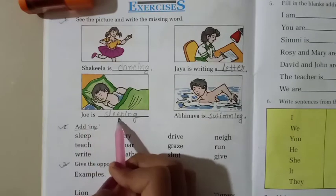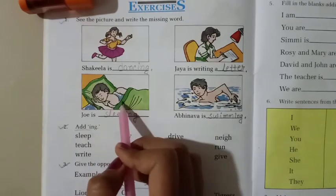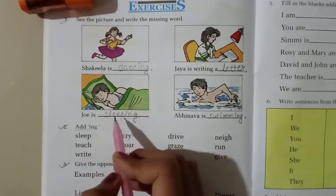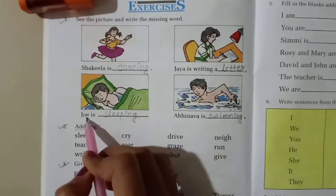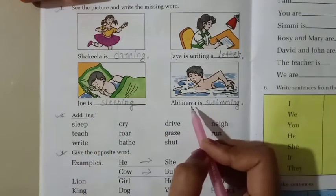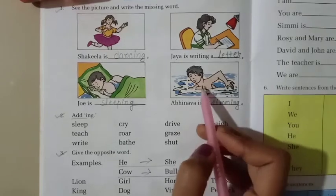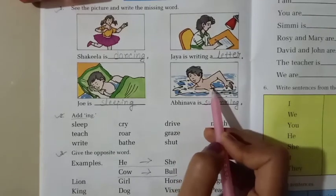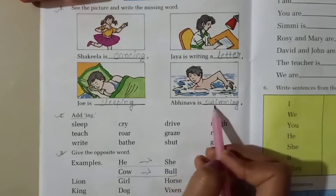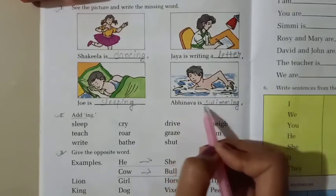Joy is dash. What is Joy doing? Joy is sleeping. So write here sleeping. Joy is sleeping. Abhinaba is dash. What is Abhinaba doing? Abhinaba is swimming. So write here swimming. Abhinaba is swimming.